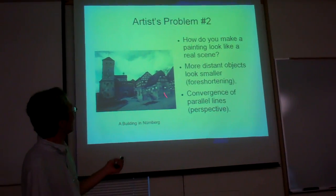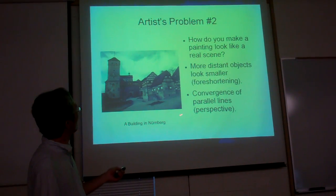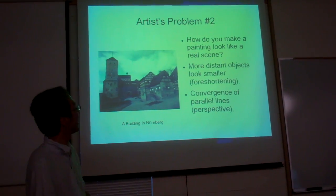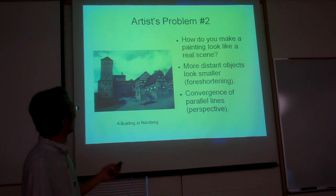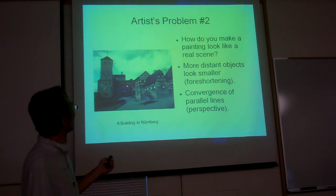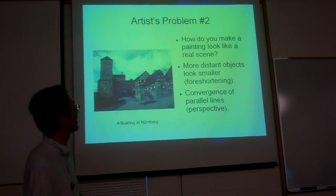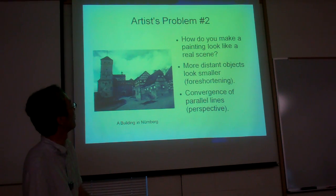There are two important features about any realistic scene. The one important feature is kind of the most obvious: the more distant an object is, the smaller it appears to be. This falls into the general category of foreshortening.